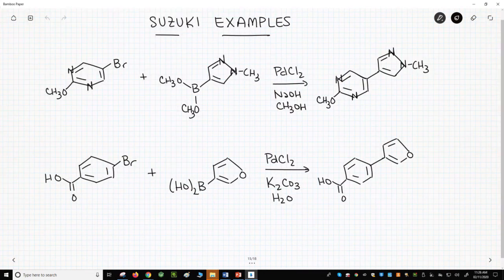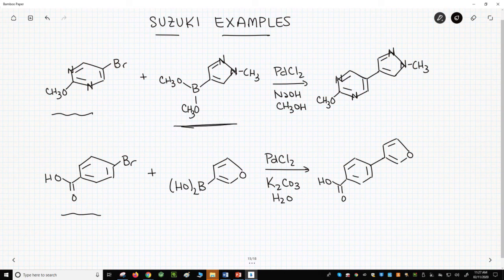We have two Suzuki couplings on the screen. Both include an aryl halide, either a boronic ester – and we have the boronic ester on the top, or a boronic acid – we have an acid on the bottom – and a palladium catalyst to form the new biaryl product.